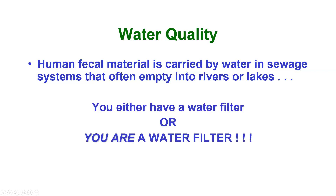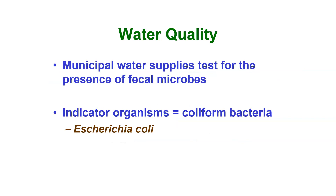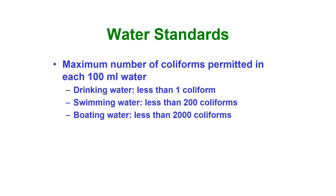A wise man once said: either you have a water filter, or you are a water filter — and if you think about that, that's rather striking. Municipal water supplies test for the presence of fecal microorganisms, and the indicator organism they use is a coliform bacteria called Escherichia coli, or E. coli for short. It gives a very good indication of fecal contamination. Water standards in the U.S. state the maximum number of coliforms permitted in each 100 mL: drinking water, less than one coliform.